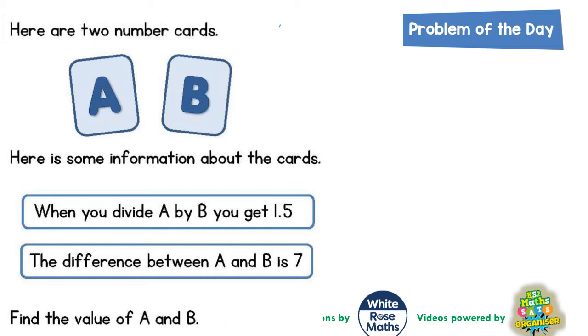Welcome problem solving fans to another problem of the day. This one is all about two number cards A and B, and we've got some information about the cards. When you divide A by B you get 1.5, and the difference between A and B is 7. Find the value of A and B.